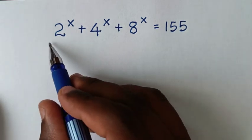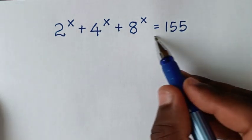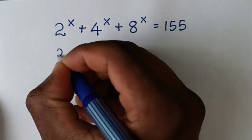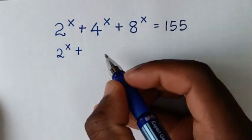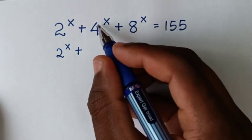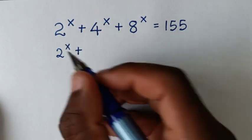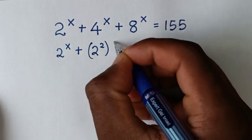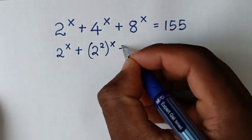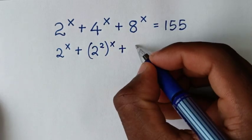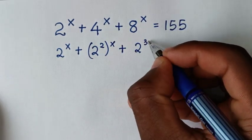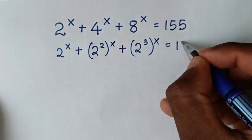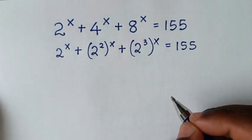To find the value of x from this equation, it will be 2^x plus 4^x. We want to make 4 have a base of 2, so 4 is 2 power 2, then bracket power x, plus 8 — 8 is the same as 2 power 3 — then bracket power x, is equal to 155.